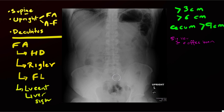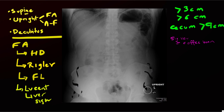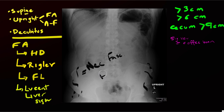Before finishing your evaluation of an abdominal radiograph, always remember to look at the soft tissues — particularly for the presence of gas. Gas will manifest as lucencies, whether linear or curvilinear, that don't conform to where you expect organs to be. This finding can be seen with necrotizing fasciitis, also known as Fournier's gangrene when it affects the perineum — a very aggressive polymicrobial infection with high mortality and morbidity that should be recognized and reported to referring physicians promptly.